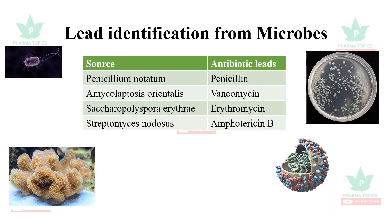Penicillin is obtained from the fungus Penicillium notatum. Vancomycin was obtained from Amycolatopsis orientalis. Erythromycin was obtained from Saccharopolyspora erythraea, and amphotericin B is obtained from Streptomyces nodosus. These are lead molecules that could be further modified — derivatives of penicillin and erythromycin such as clarithromycin and roxithromycin are identified from microbes.